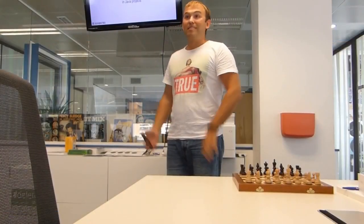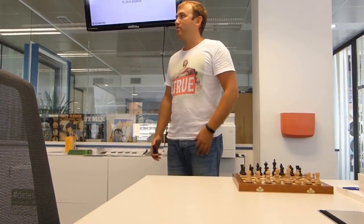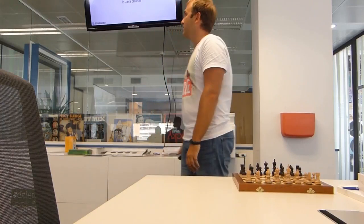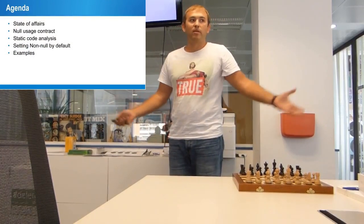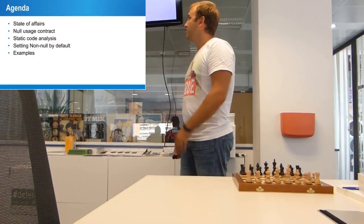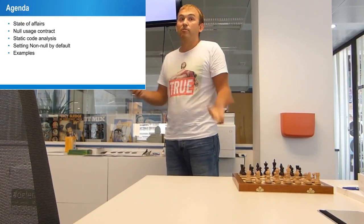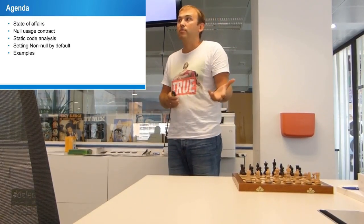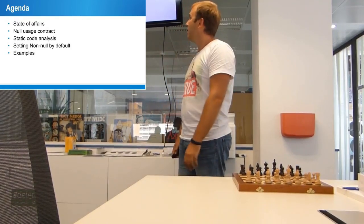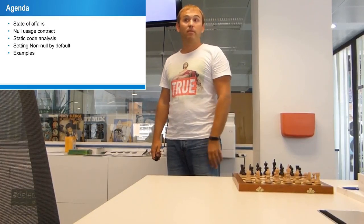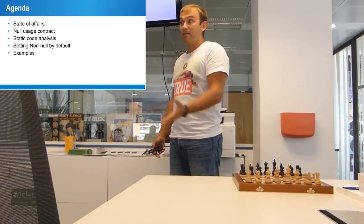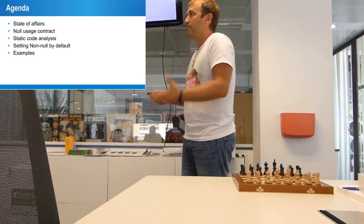The talk is about non-null by default in Java projects, especially Java projects, since other languages might have different problems. The brief agenda covers the current state of affairs with nulls, what kind of contract we have with using nulls in current projects, static code analysis, how to set non-null by default, and what benefits we can get. I'll show examples using our real code.